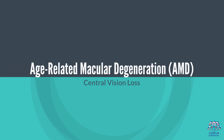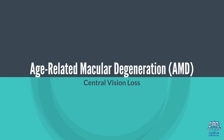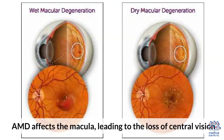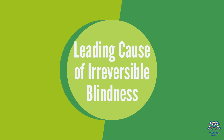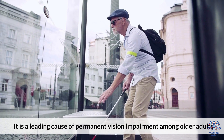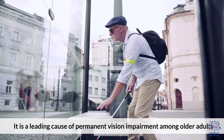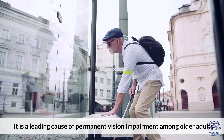3. Age-Related Macular Degeneration (AMD) — Central Vision Loss. AMD affects the macula, leading to the loss of central vision. It is a leading cause of permanent vision impairment among older adults.